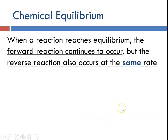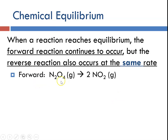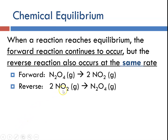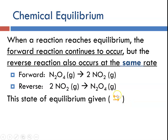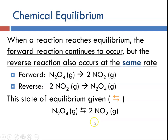When a reaction reaches equilibrium, the forward reaction continues to occur and the reverse reaction also occurs, but they're occurring at the same rate. If we look at this reaction — dinitrogen tetroxide, which decomposes to form two nitrogen dioxides, and the reverse, two nitrogen dioxides combine to form dinitrogen tetroxide — the state of equilibrium would be the point where both the forward and reverse reactions are taking place but occurring at the same rate.